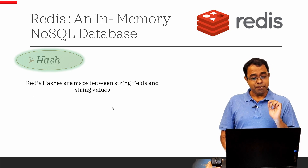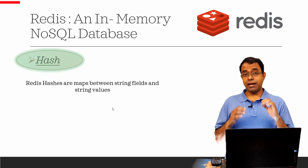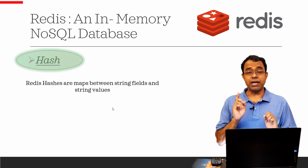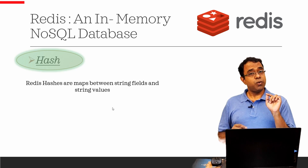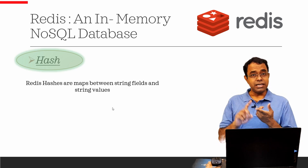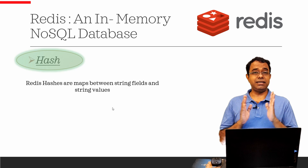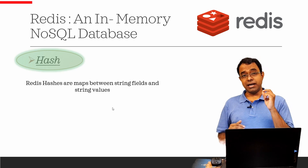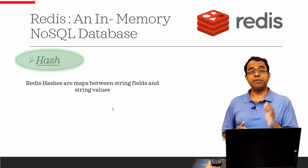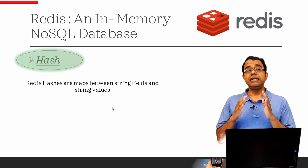Redis hashes are mappings between string fields and string values. Before we go further, remember that Redis is a key-value store, which means that no matter which data type you use, it will always have a key and value. Keys will be there in string, list, set, sorted set, as well as in the hash data type. It is the value that is arranged differently, and we end up using different data types in Redis based on our requirement — based on the speed of accessing or storing a particular set of data.